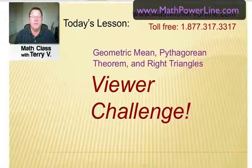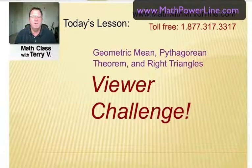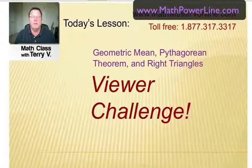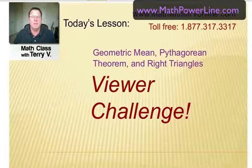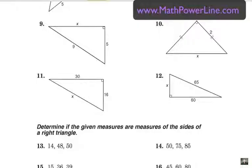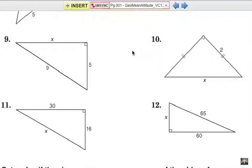This is a viewer challenge involving the geometric mean in right triangles and Pythagorean theorem. We're looking for being able to find parts of a right triangle. Now viewer challenge means that we're extending a lesson of a previous video, or maybe this is a question that's been sent in by a viewer. So here we go, we have three or four, looks like four examples for you to try.